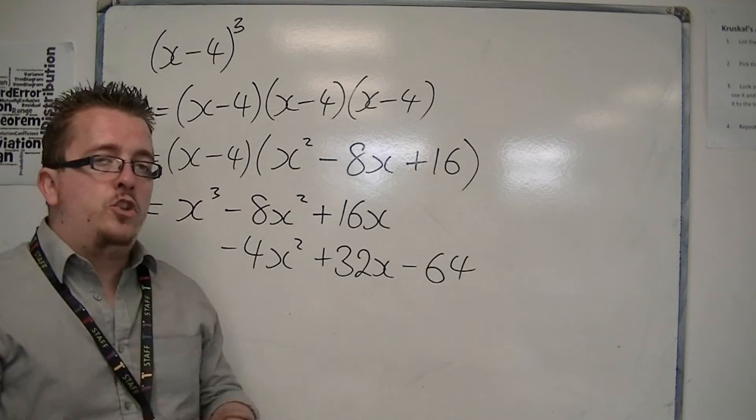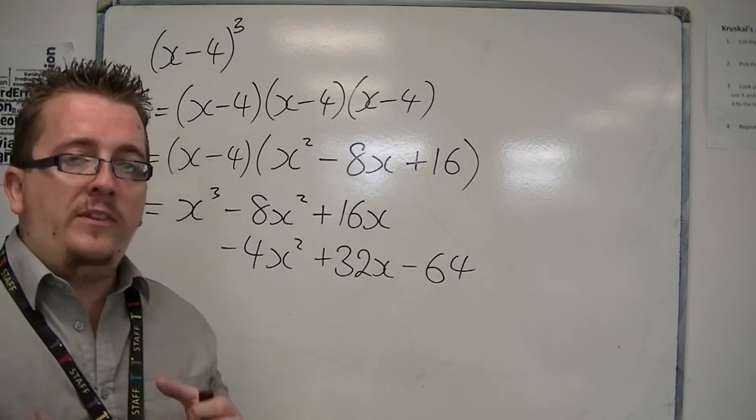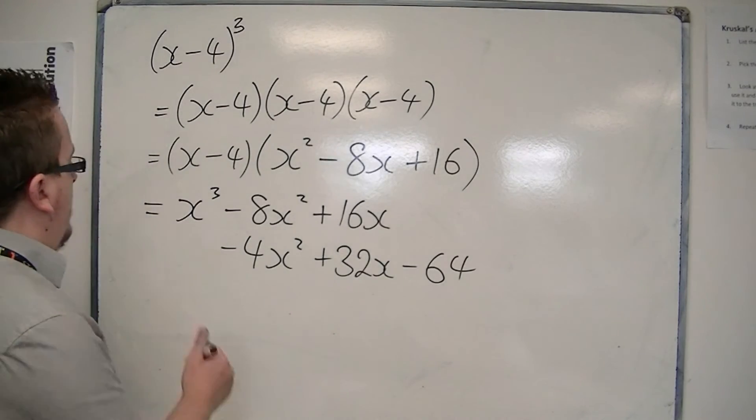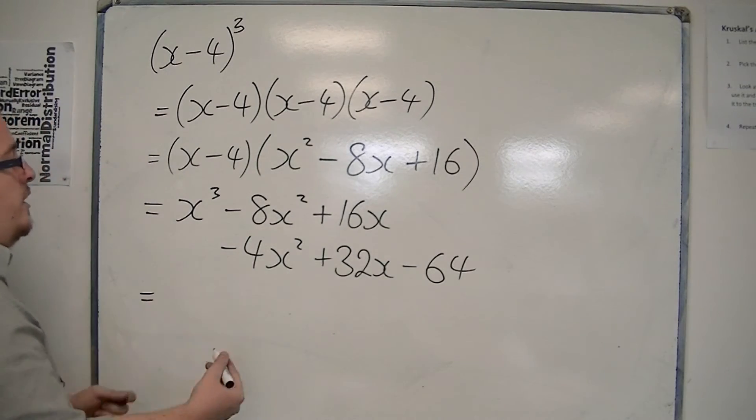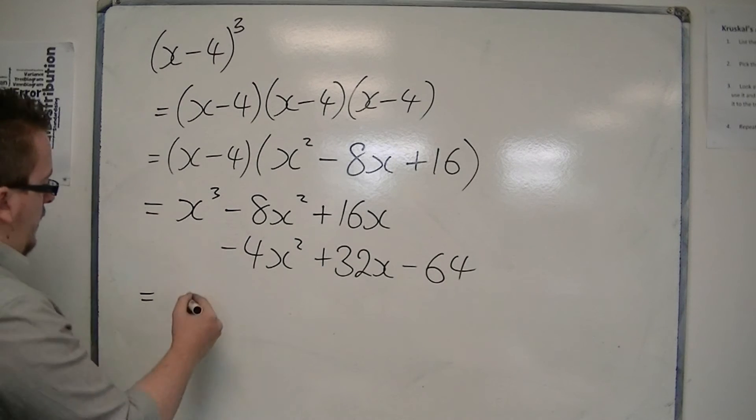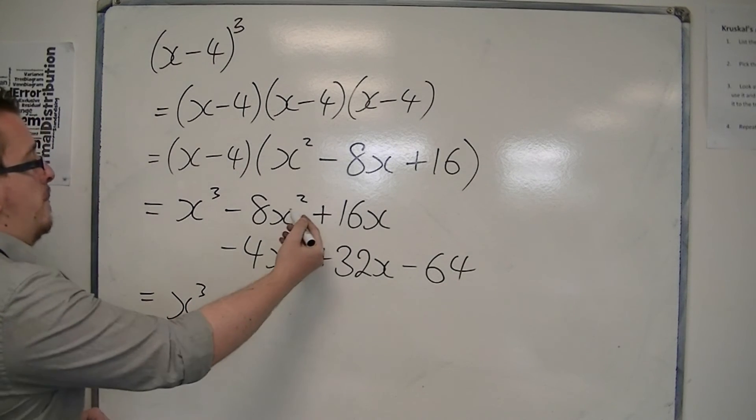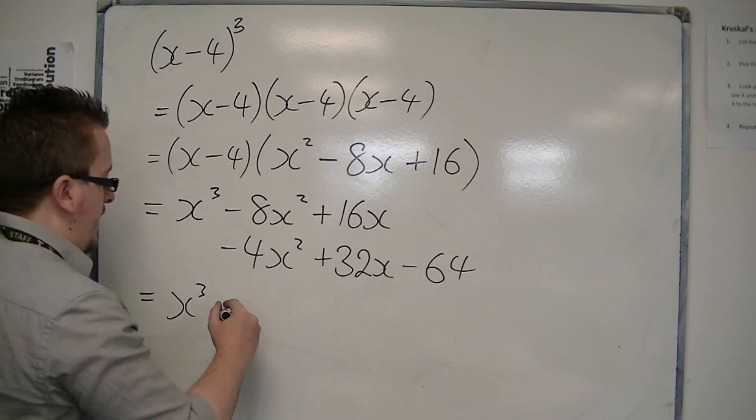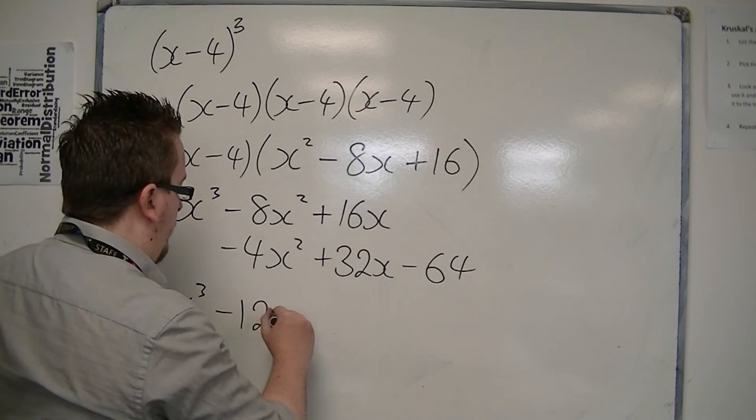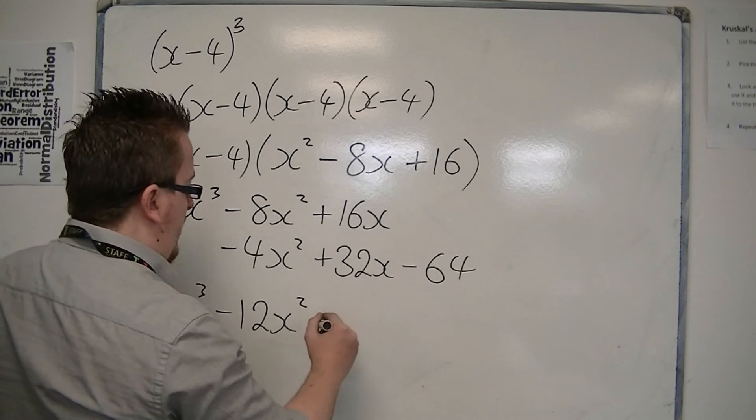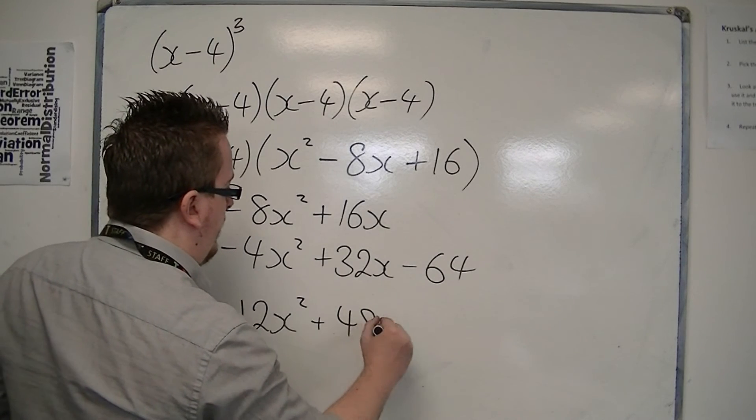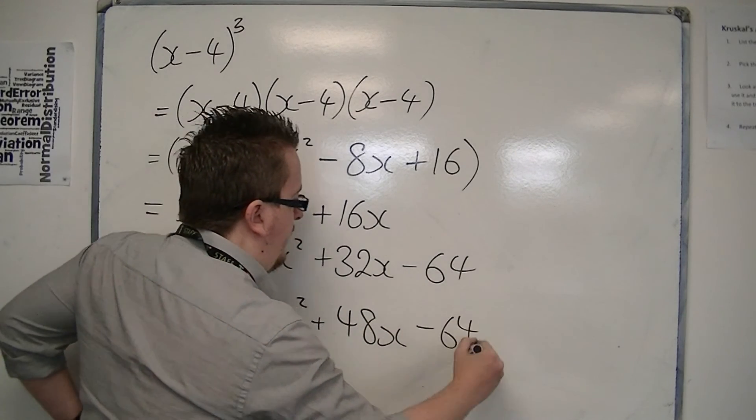So it's just a way of making sure I've grouped the pieces together that I want, and it makes it easier for me to then collect like terms. So I've got x cubed minus 8x squared, take away 4x squared, is minus 12x squared. 16x plus 32x is 48x, take away that 64.